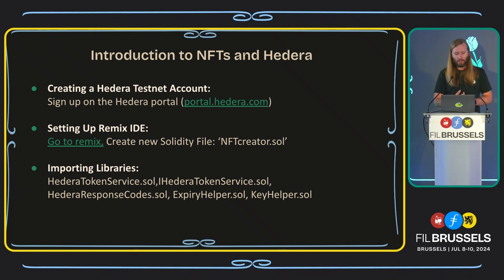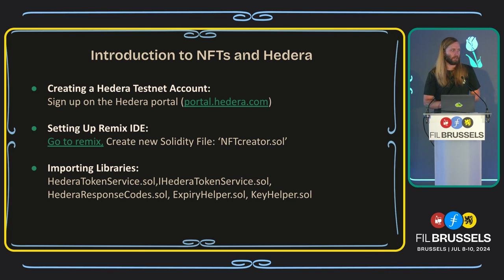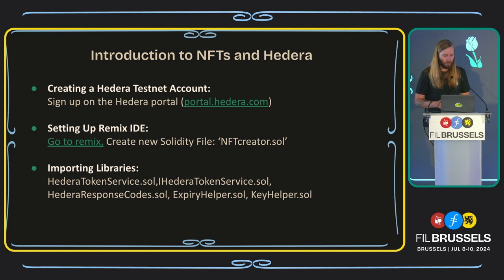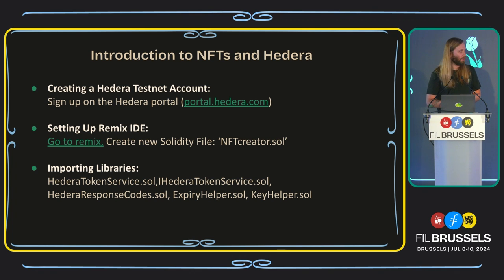To create a testnet account on Hedera, just go to portal.hedera.com and log in with an email. From there, you'll be assigned a wallet, and then you can take the wallet and the private key and put it into your .env file. After you have your Hedera account, you can go to Remix — the online website — to create the Solidity files. Then you need to import some libraries for this demo.